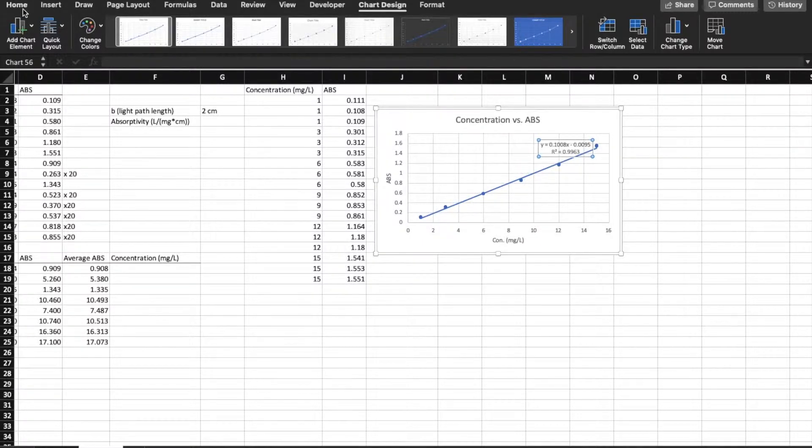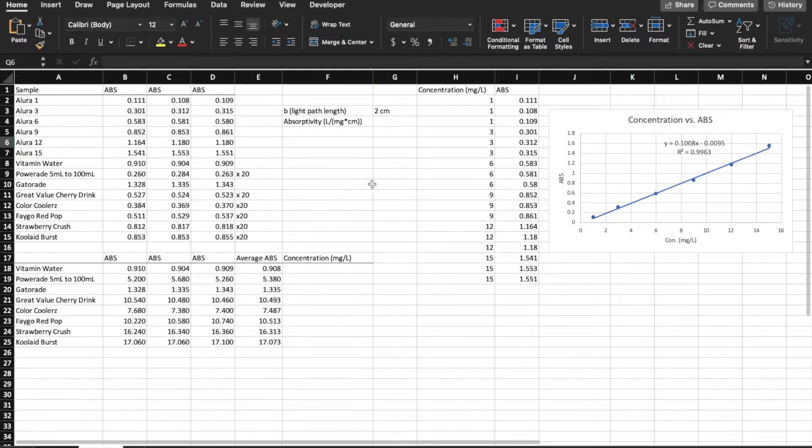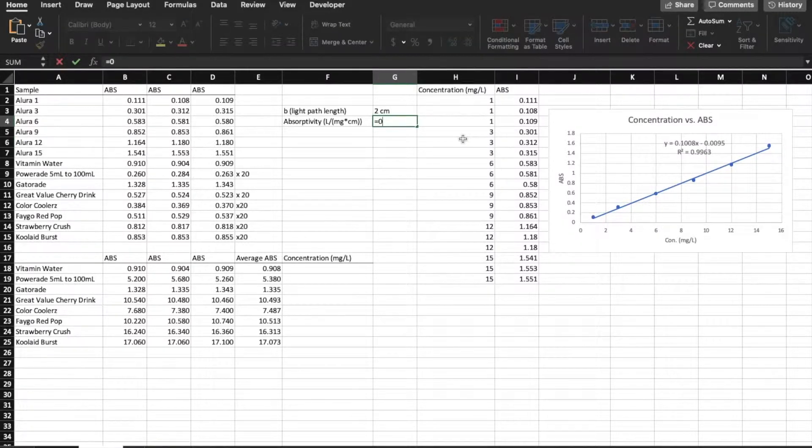That's going to tell us how good the trend line is, and it's going to display the equation. So the equation, we can use that. The slope of the equation is equal to, helps us to find the absorptivity. The absorptivity is the slope divided by the light path length. The light path length is just simply the length between the sample and the light in the Hatch meter.